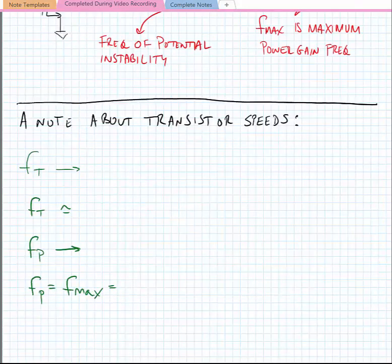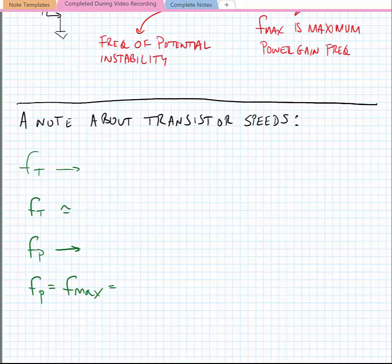Okay, so with this we're going to make a little bit of a divergence here and talk about a few different transistor speeds. And then in the next lecture we're going to return to stability and talk about stability more from the microwave perspective, which is using S parameters.